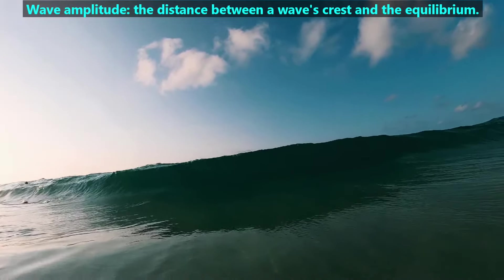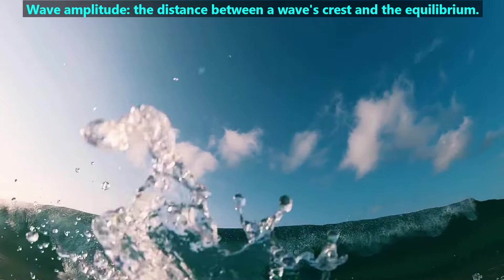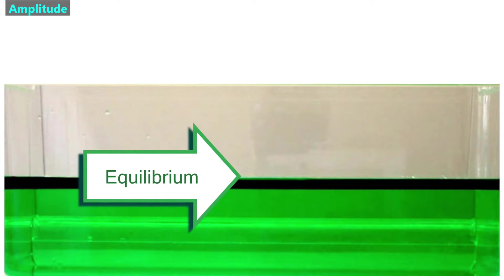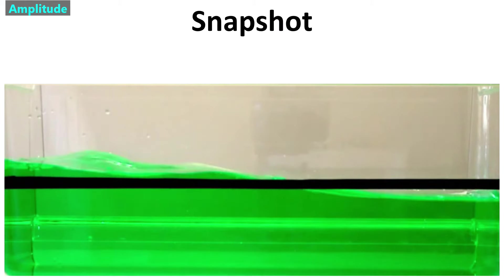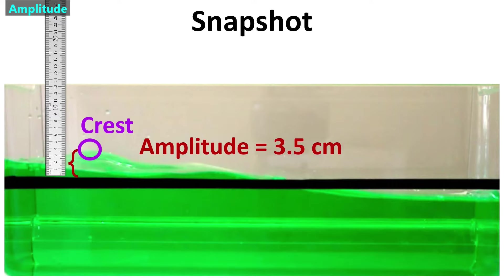We will begin with wave amplitude. Wave amplitude is the distance between a wave's crest and the equilibrium. To measure the amplitude of these waves, we first need to know the water's level if there were no waves. We call that level the medium's equilibrium. We'll put some black tape just below the equilibrium. Then we get a picture when there are waves — we call this picture a snapshot. Next, we find a crest, which is the topmost part of a wave, and we measure the distance from the crest to the equilibrium. That distance is the wave's amplitude. For this water wave, the amplitude is 3.5 cm.